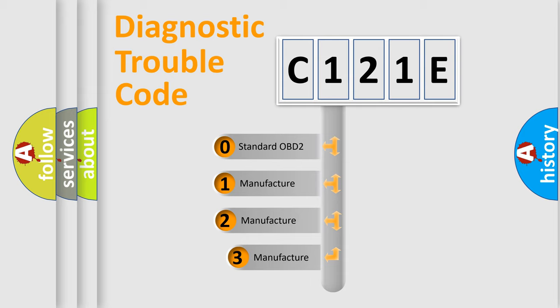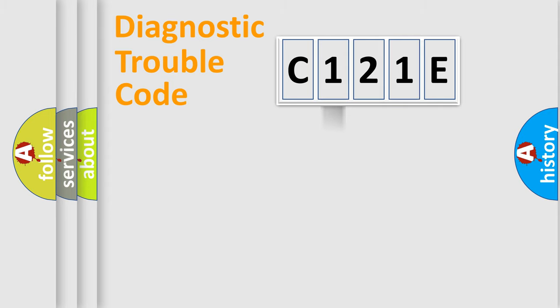If the second character is expressed as zero, it is a standardized error. In the case of numbers 1, 2, 3, it is a car specific error.